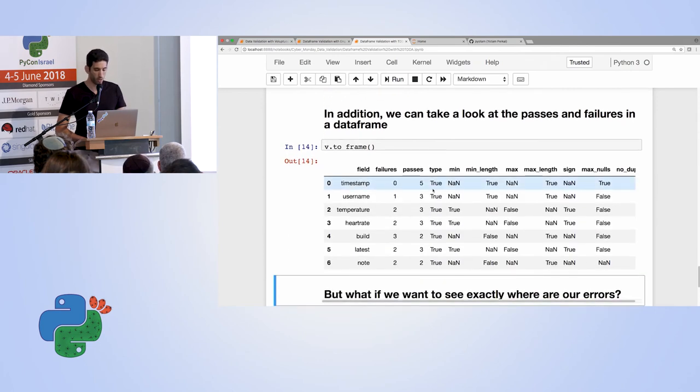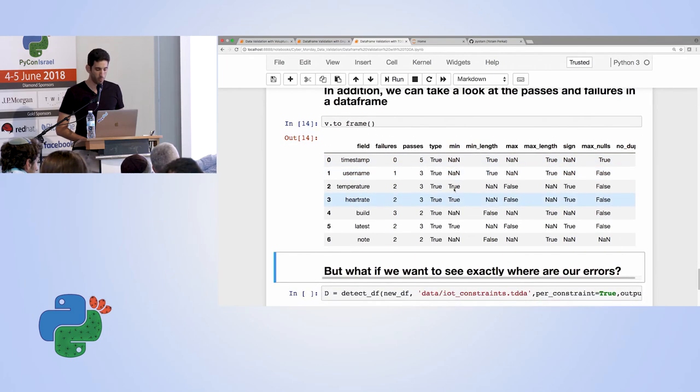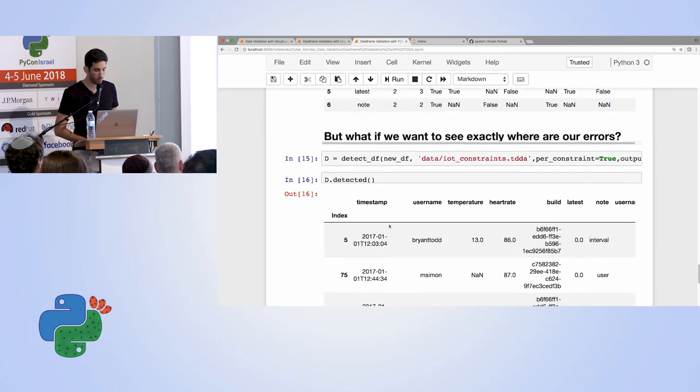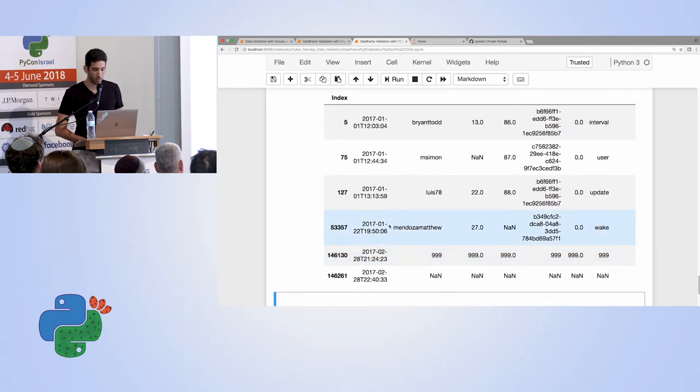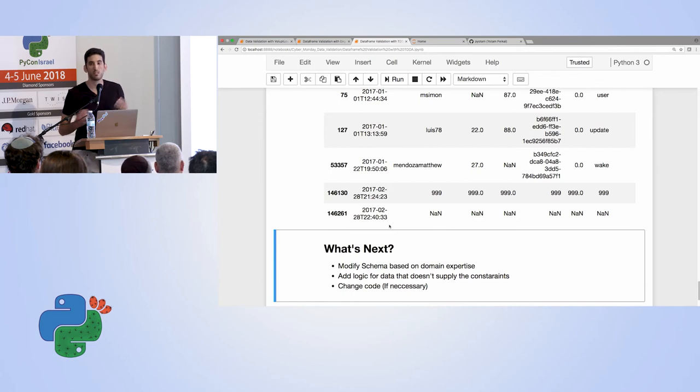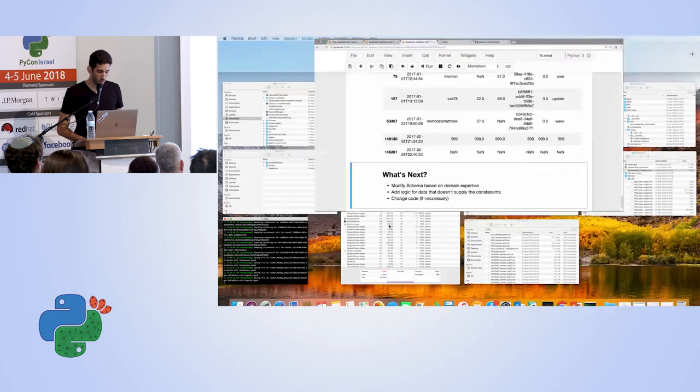There's another option to see the same output, but in a data frame format. So how many failures, how many passes for each test, or for each feature, and a detailed example. None means that this specific example isn't relevant for that specific field. And we can see, as I said, by running detect DF, the exact rows that actually failed. And again, this is the phase when it comes to us to make the decision on what to do regarding those errors. But at least we know that we have errors, so we can address them. Okay, so that was TDDA.